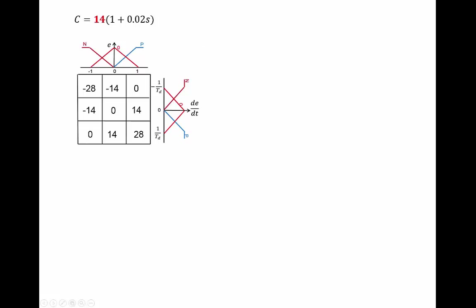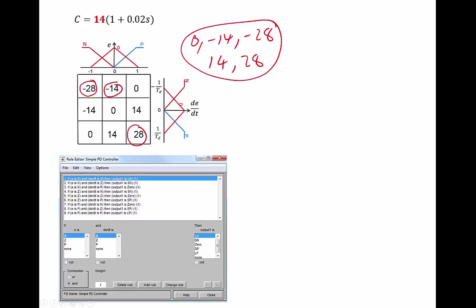In our previous discussion about fuzzy logic, we used minus one for negative and minus two for large negative. These values have to be modified to include the gain constant, since we cannot add it separately. So our lookup table will be modified to take the gain into account. The membership function output values become: 0, minus 14, minus 28, 14, and 28 — five values. For the implementation we will need to define these. Then for the rule base: if the error is negative and the derivative is negative, we have minus 28, which we call large negative; if error is negative and dE/dt is zero, we get minus 14, called negative.